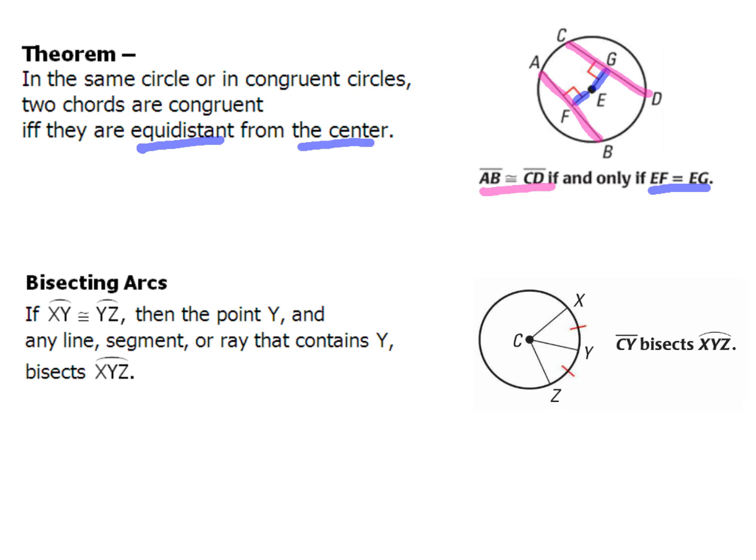Now I've got another idea here about bisecting arcs. XY and YZ are congruent. If the two arcs are congruent, then this point Y, if Y is on that piece and those two arcs are congruent, then CY is going to chop that whole arc in half. So if the whole arc was 70, that means each one of those pieces from Y to Z or Y to X would be half of that, it'd be 35.